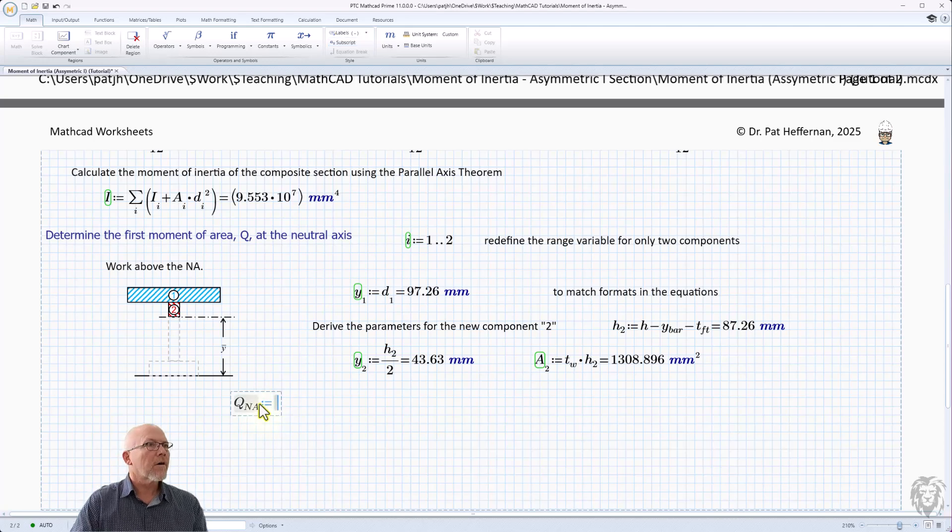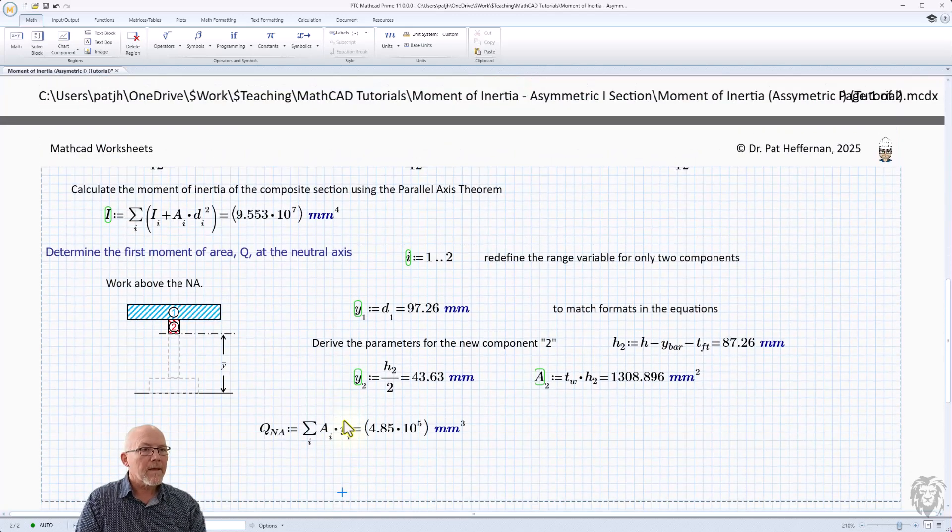The last thing to do is to calculate the Q of the neutral axis. If you recall from the formula, once again, we're picking up our summation sign. And this is I. Now, I don't think I mentioned when I set up this section, I redefined my range variable, just 1 to 2, to match the 2 here. There's other ways to do it. I could have used J, you could have used K. I chose to reuse I, and that then becomes A at I multiplied by Y at I. And that's typically expressed in millimeters cubed, not liters. So we can change the units there. And that's great.